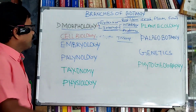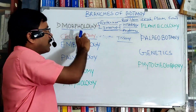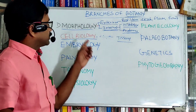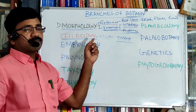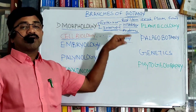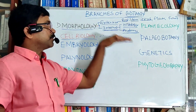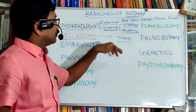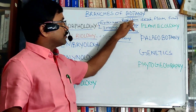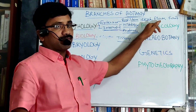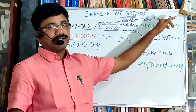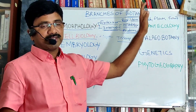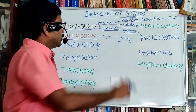The first branch is morphology. Morphology means the study of external organs — the aerial parts of the plant body that include root, stem, leaf, flower, fruit, etc. So it is known as external morphology.